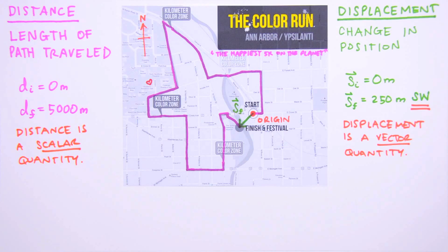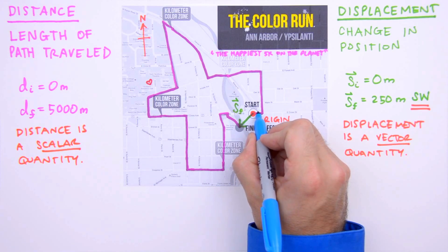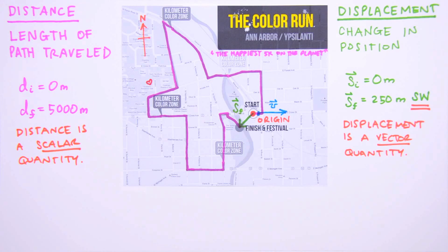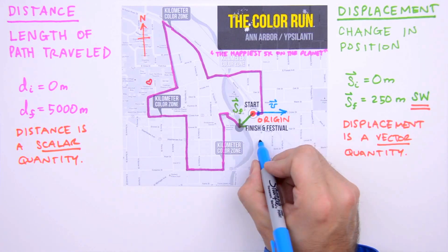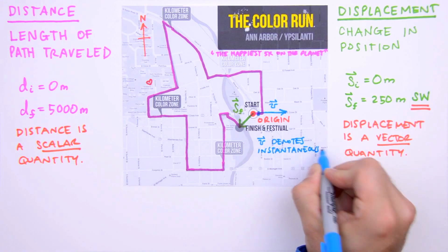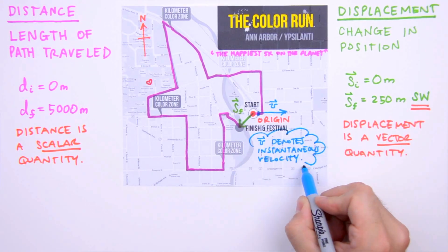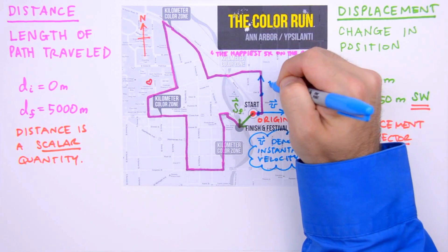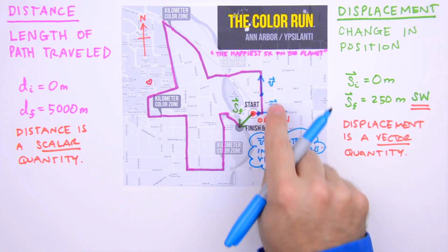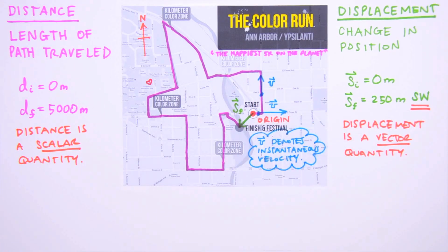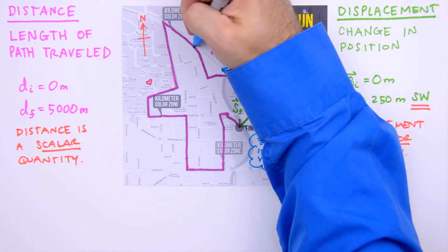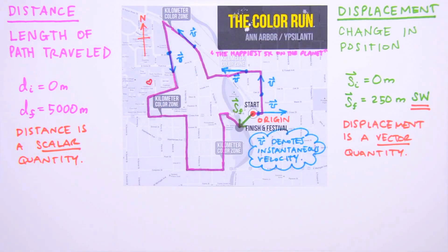Now we can turn our attention to speed and velocity. Suppose our runner leaves the starting line traveling eastward at a couple meters per second — we'll indicate this motion with an arrow. This arrow represents the magnitude and direction of the runner's instantaneous velocity, or velocity at that instant. Since the magnitude and direction of instantaneous velocity change throughout the race, we'll traverse the course indicating different velocities. Notice that the second velocity vector arrow is shorter than the first, implying the runner is moving more slowly at that position.